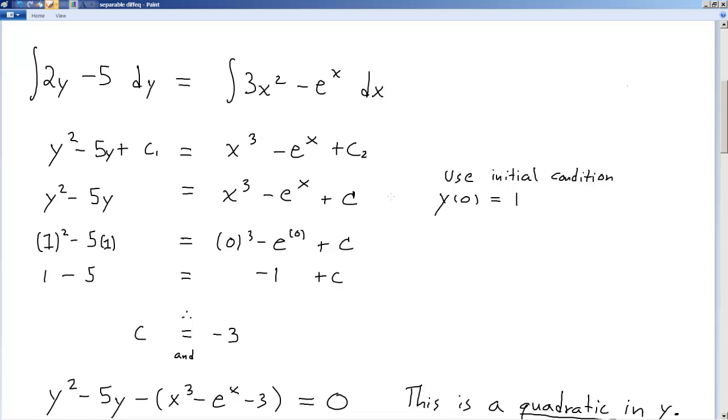Now I want to use the initial conditions at this point. The initial conditions, y of 0 equals 1. That means everywhere I see an x, I put 0. Everywhere I see a y, I put 1. I simplify that, and I can find that c is equal to negative 3.